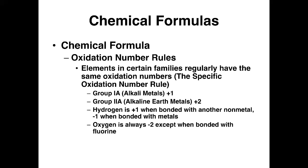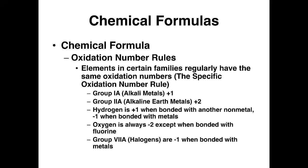Oxygen is always minus 2 except when bonded with fluorine. The rest of the group A halogens are generally minus 1 when bonded with metals, but they can have other oxidation numbers when bonded together with a nonmetal such as oxygen.